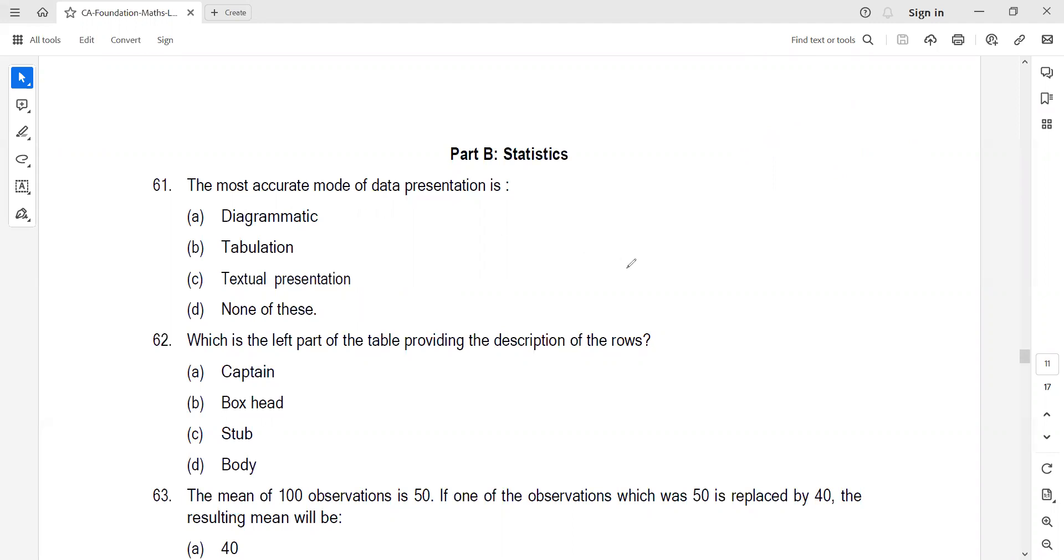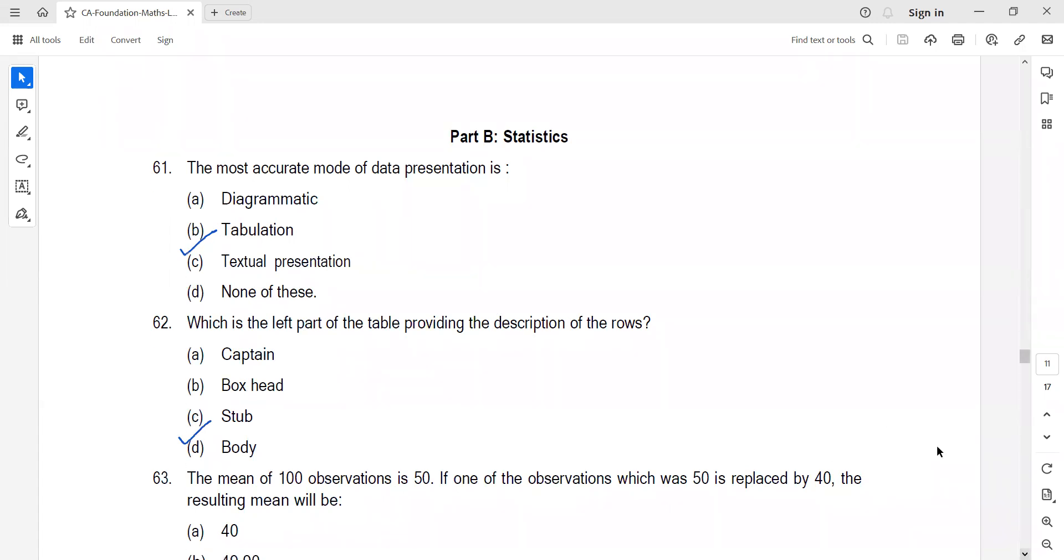The most accurate mode of data presentation is tabulation. This is from module set A, chapter 13. Next, which is the left part of the table providing the description of the rows? The description has been provided by stub. These two questions we have already dealt with. Next question is number 63.